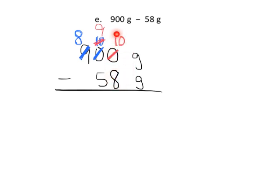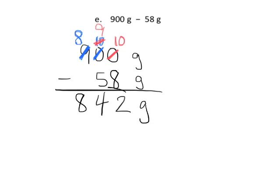Now we can finish: 10 ones take away 8 gives us 2. We have 9 tens take away 5 tens gives us 4. Then 8 hundreds take away nothing leaves us with 8 hundreds. So the answer is 842. It's worth talking about how we regrouped that 900, so let's look at that with a place value chart.